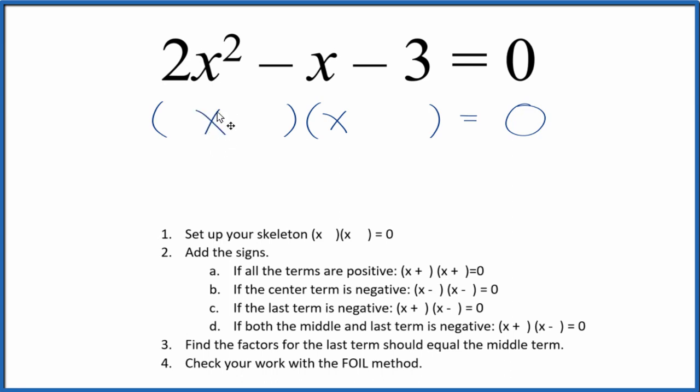the x here and then write 2—that's our skeleton. Next we would add the signs. In general, if the middle term and last term are negative like we have here, we have a positive and a negative. But with the 2, I don't know where to put the positive or negative right now, so let's leave those off. We do know one will be positive and the other negative.